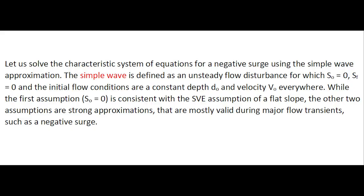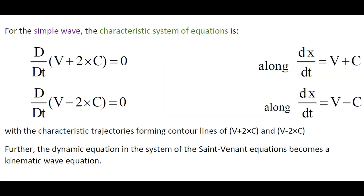Let us solve the characteristic system of equations for a negative surge using the simple wave approximation. The simple wave is defined as an unsteady flow disturbance for which the bed slope is assumed to be zero, the friction slope is assumed to be zero as well, and the initial flow conditions are a constant depth and velocity everywhere. For a simple wave, the characteristic system of equations can be simplified as shown here.